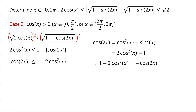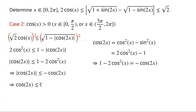So the inequality now becomes |cos(2x)| ≤ -cos(2x). This implies that cos(2x) must be less than or equal to 0.